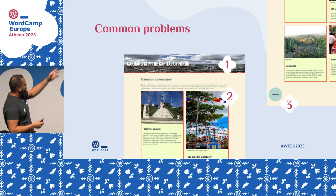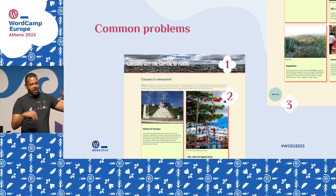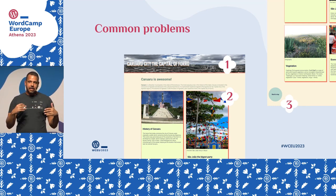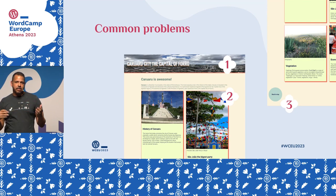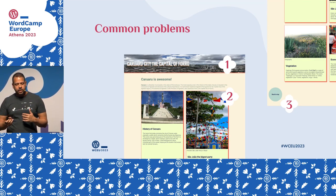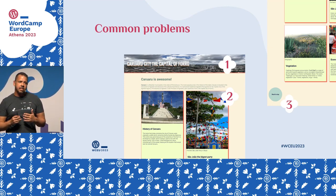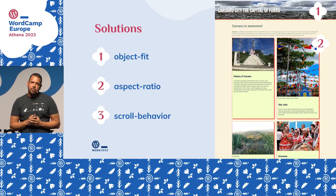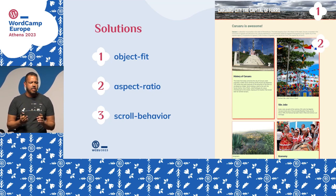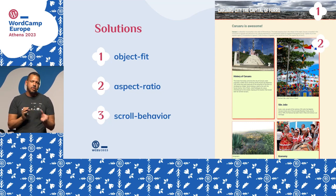So the problems here are: the header image is kind of distorted, the card image has uneven aspect ratios, and there's a back-to-top button. I saw a lot of people installing a plugin for a back-to-top transition when you can do it with CSS — you don't need any fancy solution. The three CSS solutions are: object-fit, aspect-ratio, and scroll-behavior. Scroll-behavior is a simple solution that shows you sometimes don't need JavaScript.